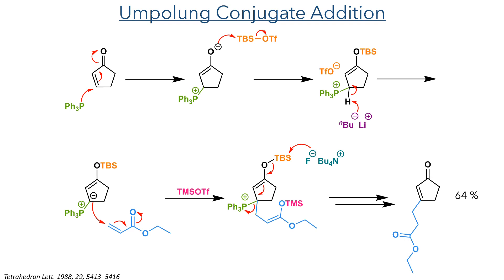This prevents unwanted side reactions that can occur from the nucleophilic addition of the alpha position of the ester. Once the conjugate addition was complete, water and TBAF were added. The fluoride can attack the silyl groups, cleaving the silicon-oxygen bond, and this drives the elimination of triphenylphosphine to reform the enone system. Overall, this reaction formed the product at a 64% yield.